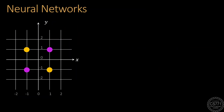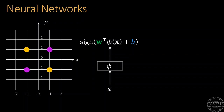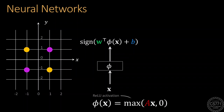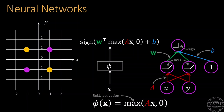Let us move to neural networks now and see how they can solve the classification problem we just solved using decision trees. Neural networks operate by taking the original features for a data point, modifying them to create new features, and then applying a linear model on top of those newly created features. For this problem, we choose a simple transformation that takes the original features, applies a linear map using a matrix A, and then passes each coordinate of the resulting vector through a ReLU activation function. The output of this neural network is then obtained by applying a linear classifier on the resulting vector.